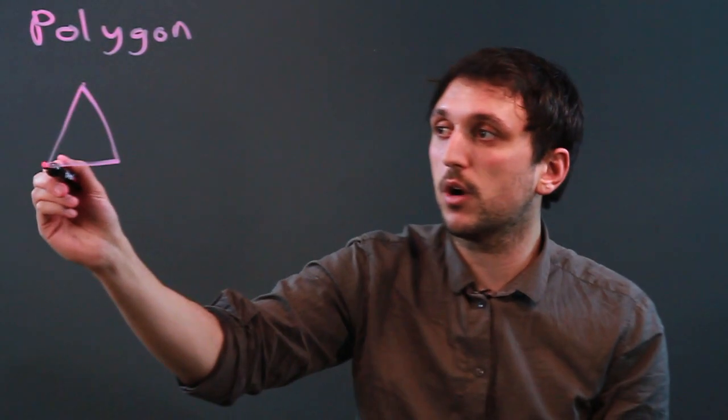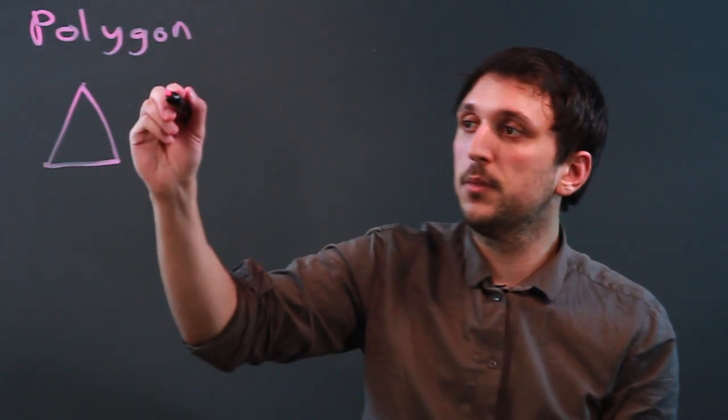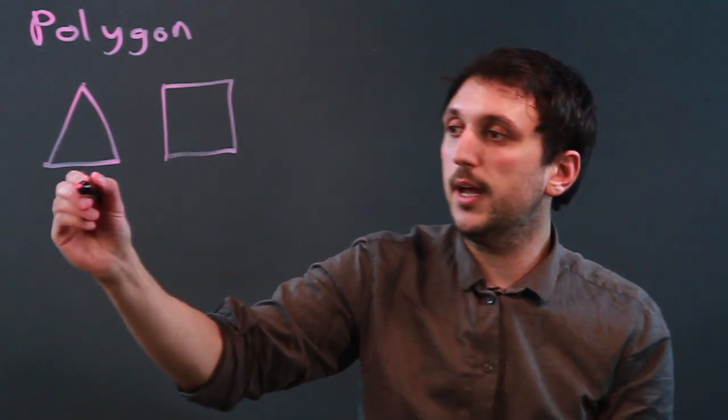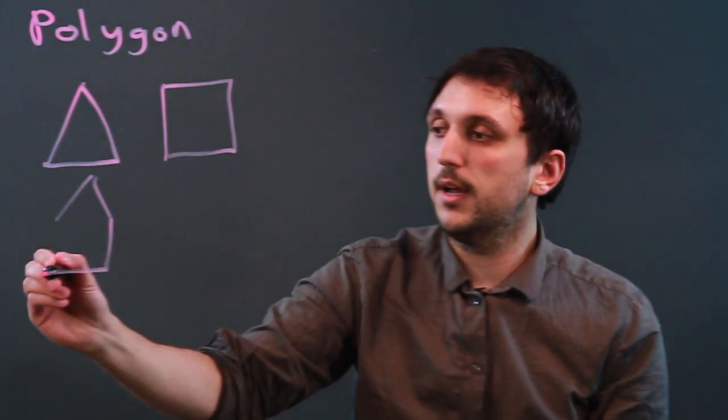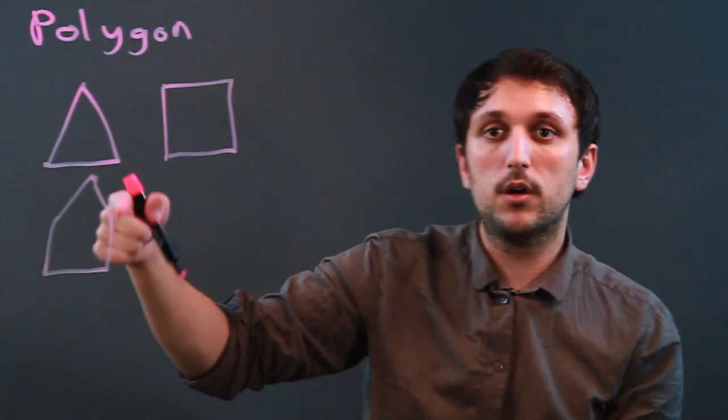So the smallest polygon is a triangle with three sides, then we have a quadrilateral, then we have a pentagon, and these are all examples of polygons.